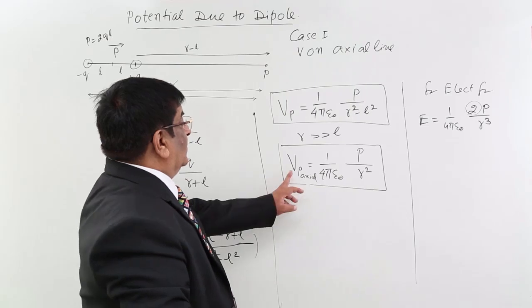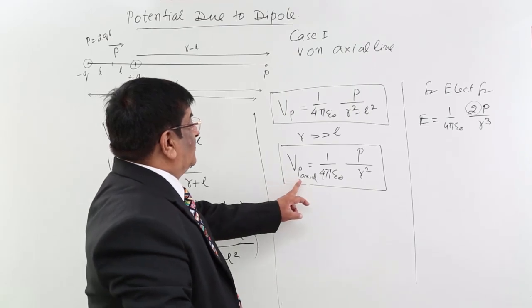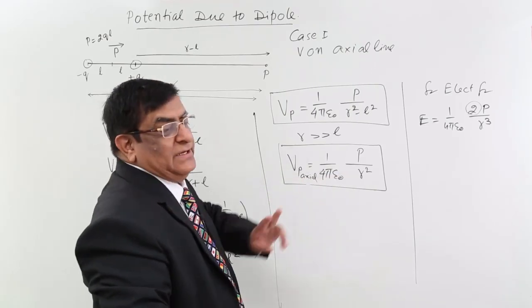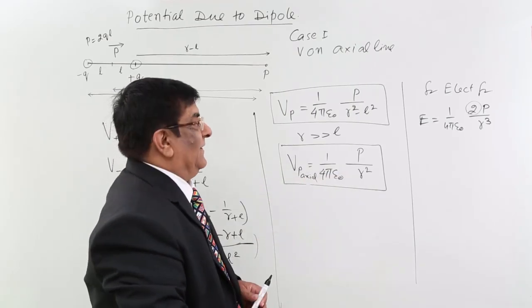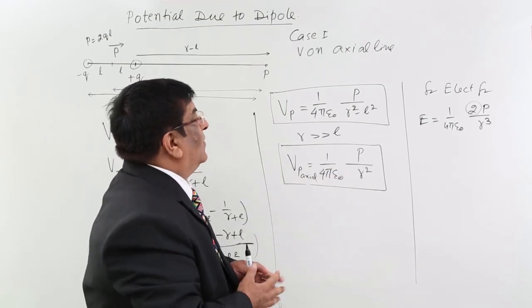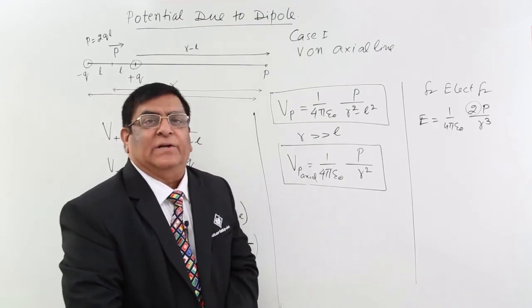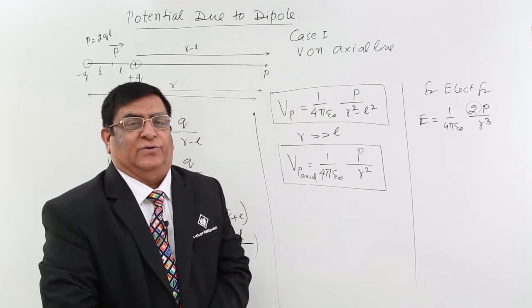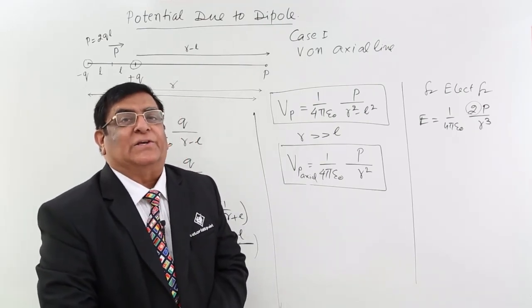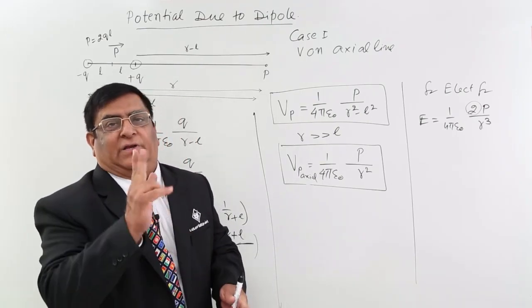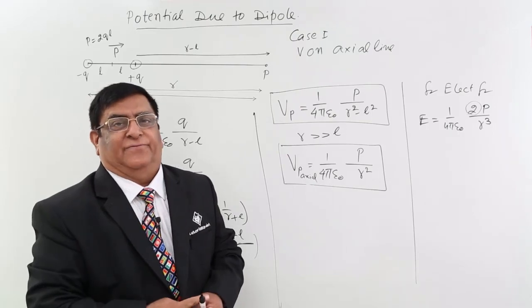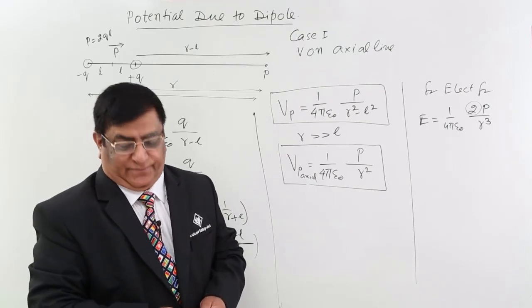This is the potential on the axial line. In the next lecture we will see what is the potential on the transversal or equatorial line of a dipole. Thank you.